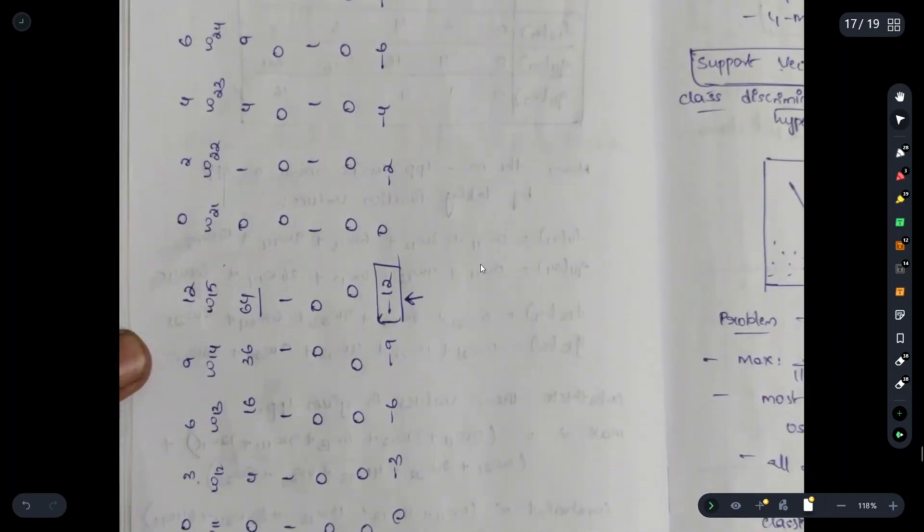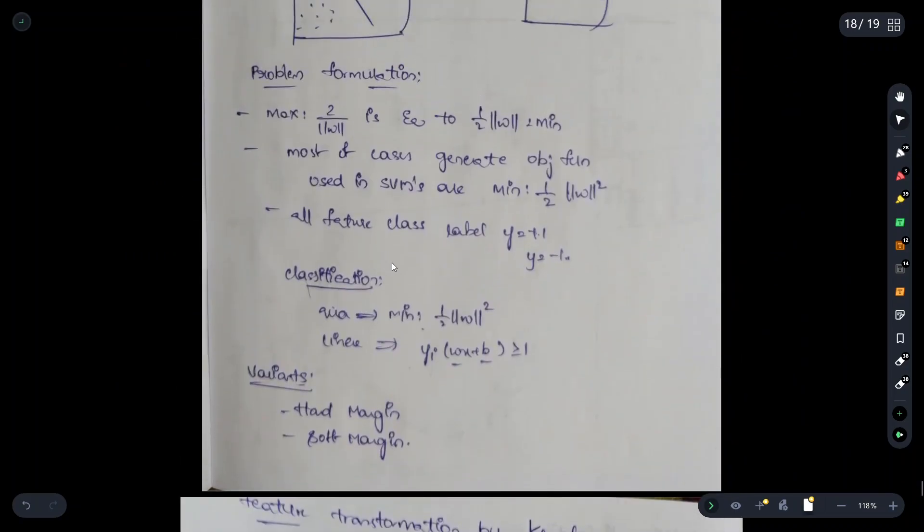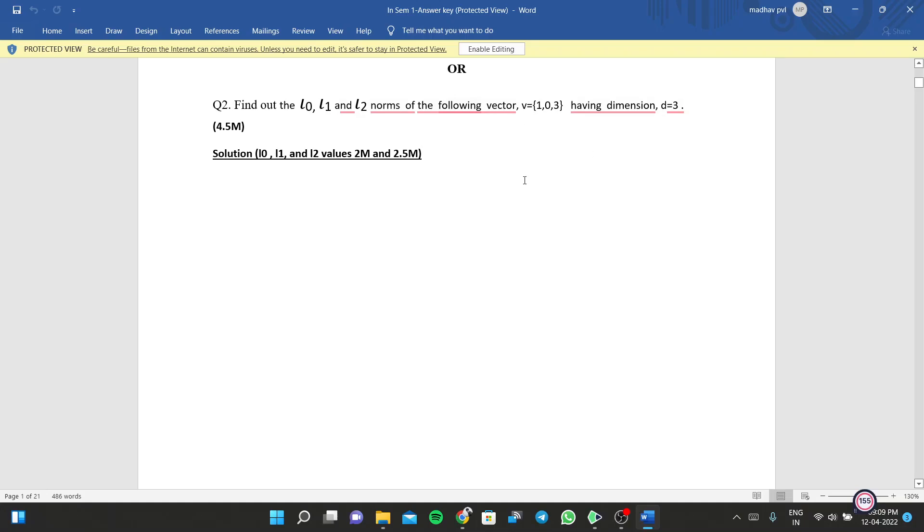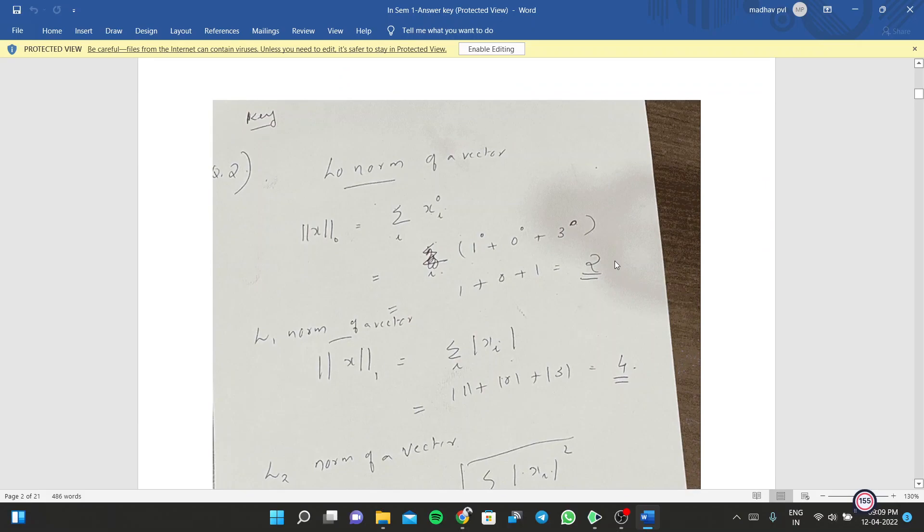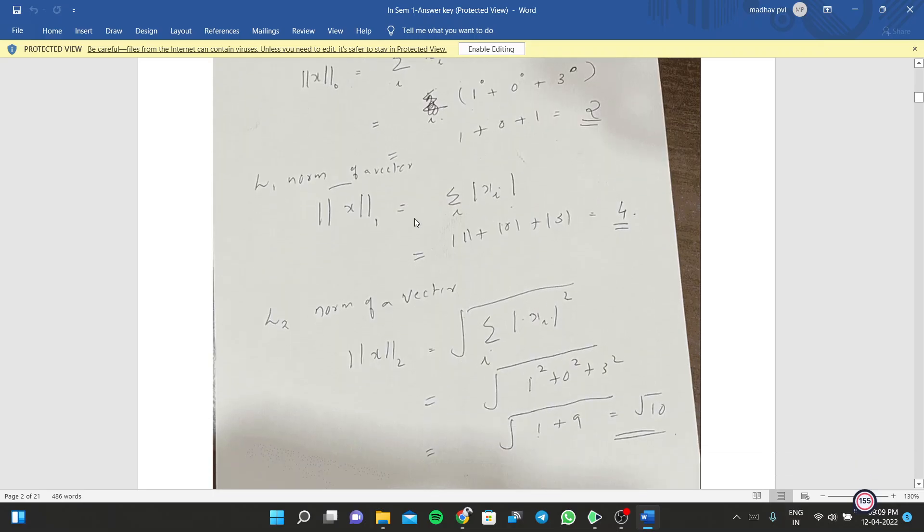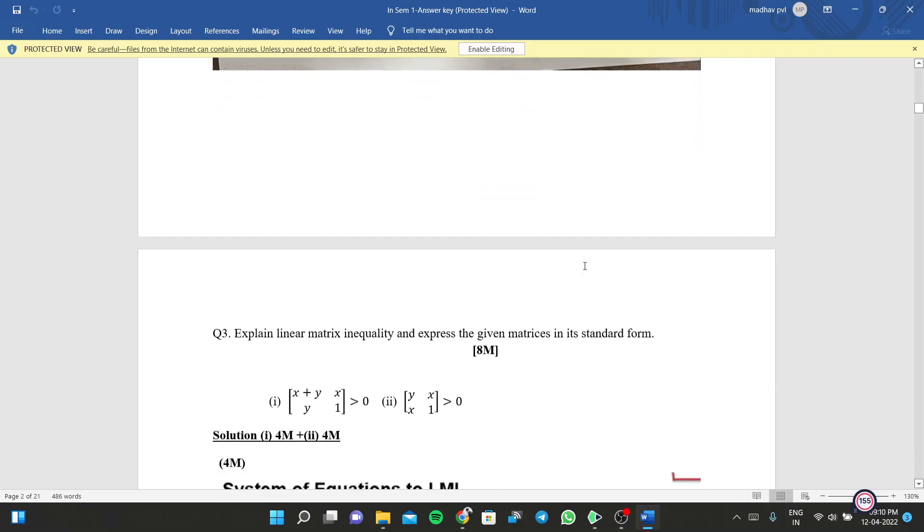Support vector machine - there's some theory in these notes. For example, v equals one zero three with values given. Dimensionality will be three: l naught, l1, l2. How to find these values: l naught is zero to the power zero applied to values. l1 value is power to the one. For l square, square root is applied. That's basically it.